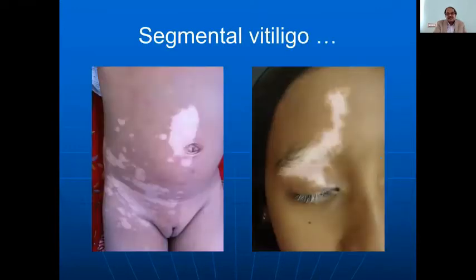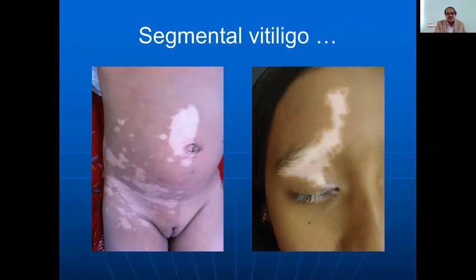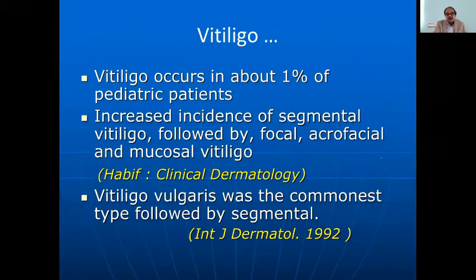Then comes the real one — vitiligo — where there is almost complete depigmentation. Children usually have a segmental or linear pattern. If you see the borders, they will be convex. It occurs in about one percent of pediatric patients, with increased incidence of segmental vitiligo. Focal acral areas like hands, feet, and lips can also be involved.